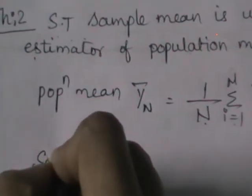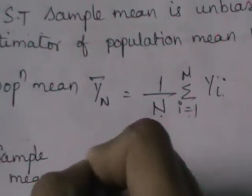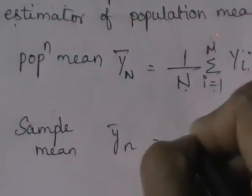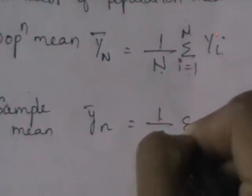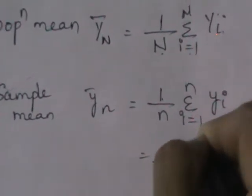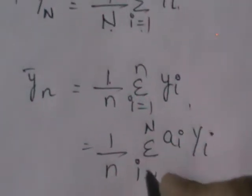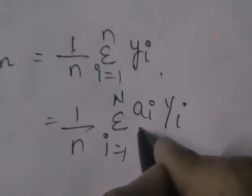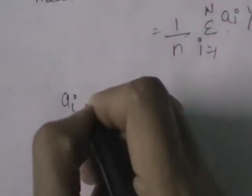What does sample mean? As I said, population characteristics are indicated with capital letters and those of sample with small letters. ȳ_n equals 1 by n, sigma i equals 1 to n of y_i. The same can also be written in terms of capital letters as 1 by n, sigma i equals 1 to N, a_i y_i, where a_i is a variable which takes two values 1 or 0, with expectation of a_i equals n by N.